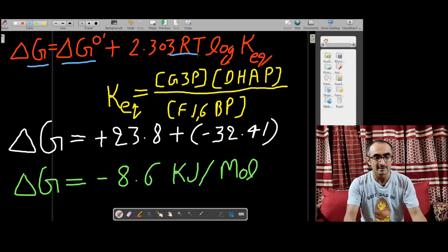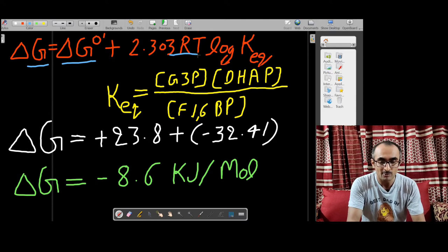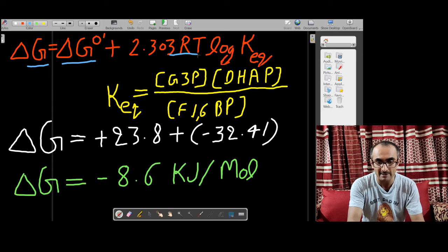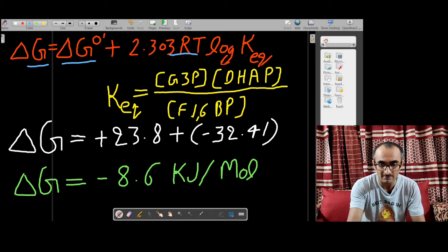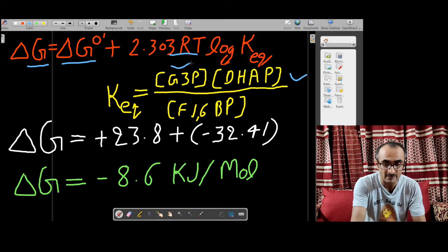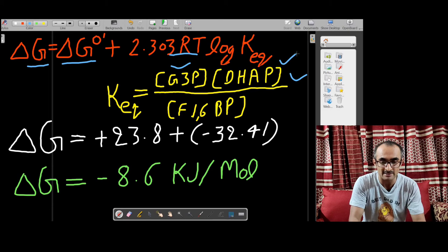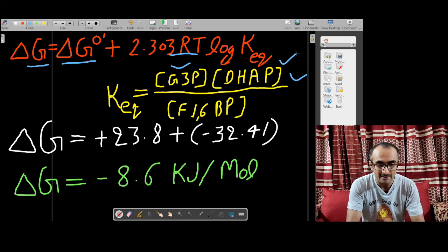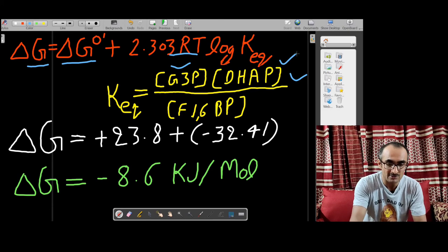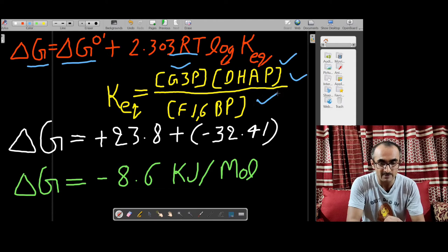In this case, Keq equals the concentration of products divided by the concentration of substrate: [glyceraldehyde 3-phosphate] × [dihydroxyacetone phosphate] divided by [fructose 1,6-bisphosphate].